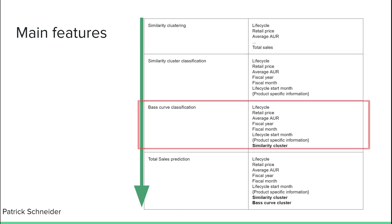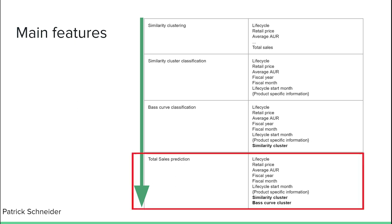The third component for the classification of the base curve cluster used the same features as in the similarity classification, plus the similarity cluster from the classification before. In the total sales prediction, the features stayed the same as the classification step before, except with the addition of the two cluster classifications of the similarity and base curve classification. This is a very generalized feature build, where other available features like marketing efforts or expert opinions can be used to improve the models.